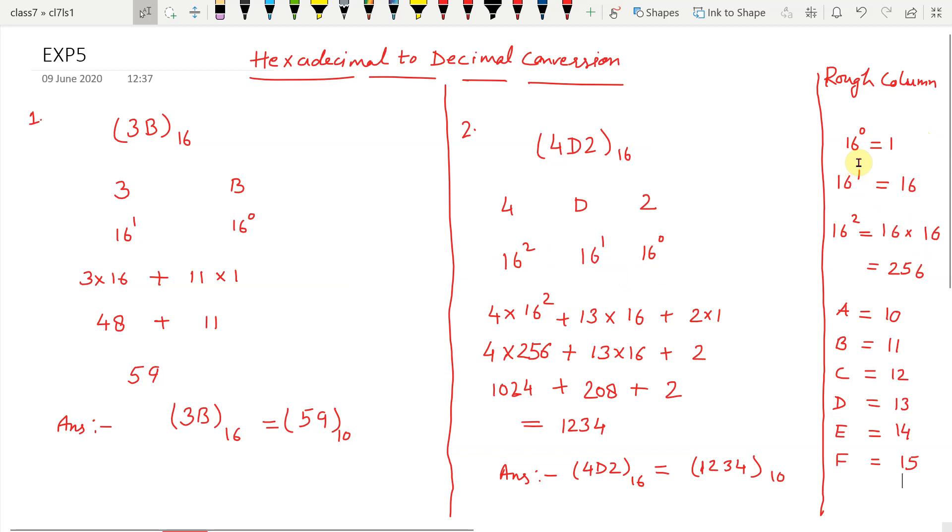See in this table here, value of 16 to the power of 0 is 1, 16 to the power of 1 is 16. 16 to the power of 2 means 16 times 16. When you simplify it, you will get 256.